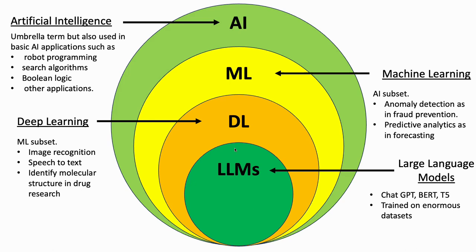So this is one representation, though it doesn't have to be the only one. AI is the broadest category; within AI you have machine learning; within machine learning you have deep learning; and within deep learning you have your large language models.